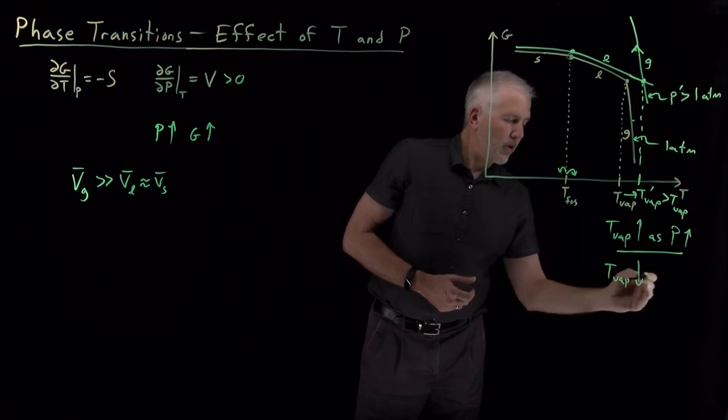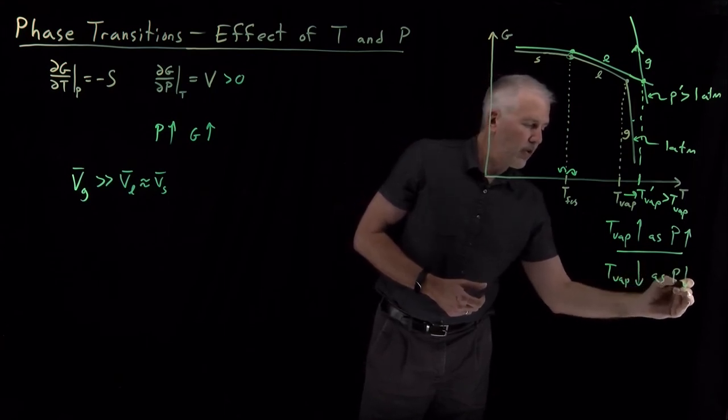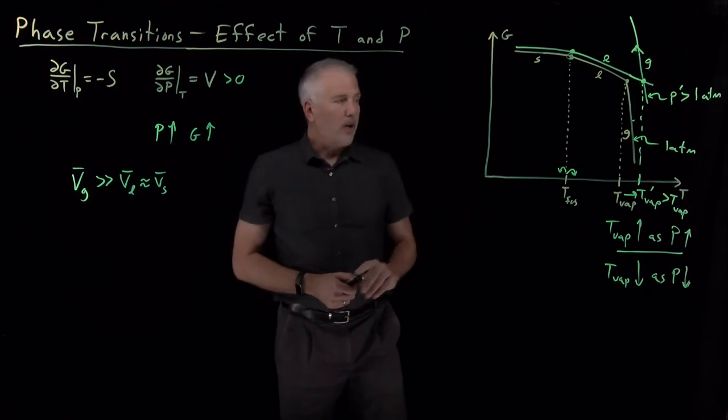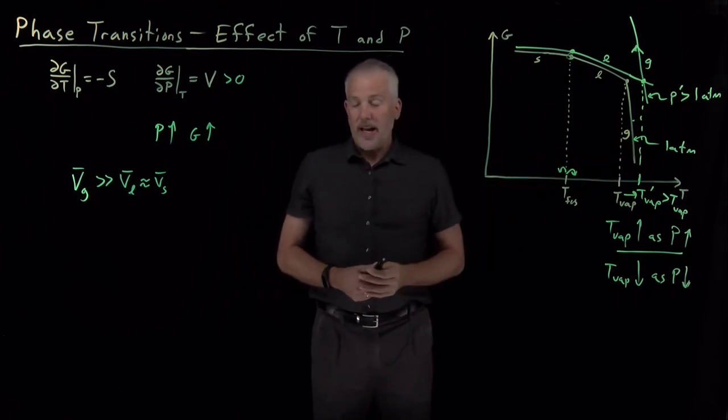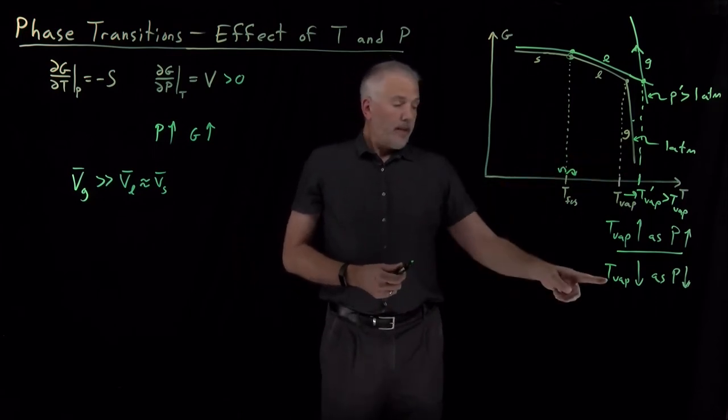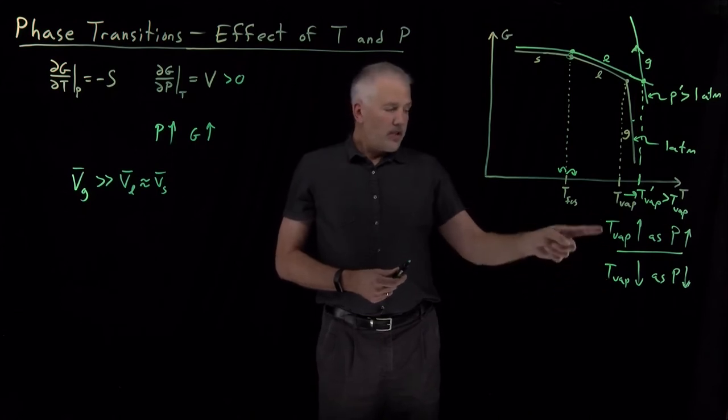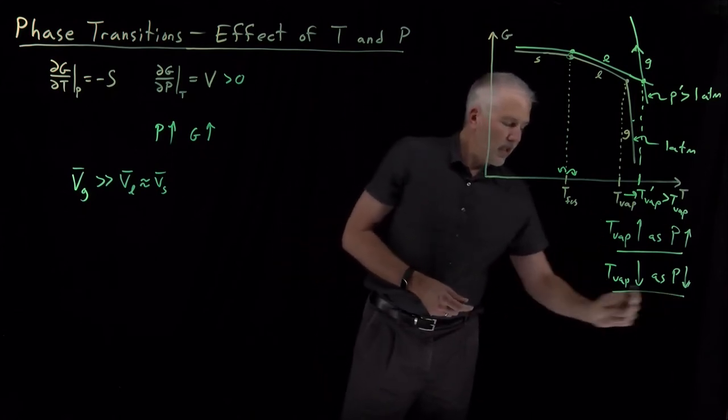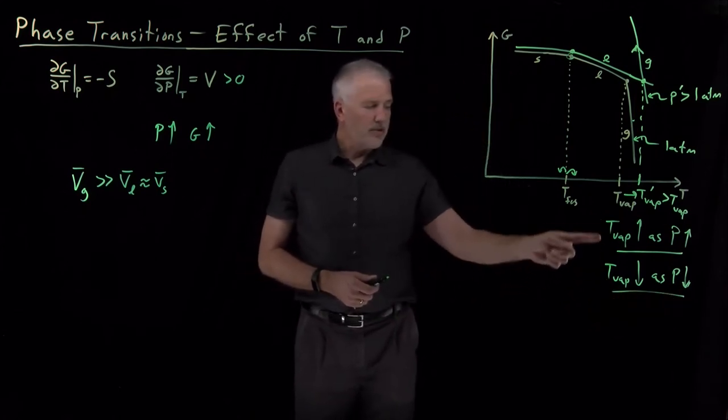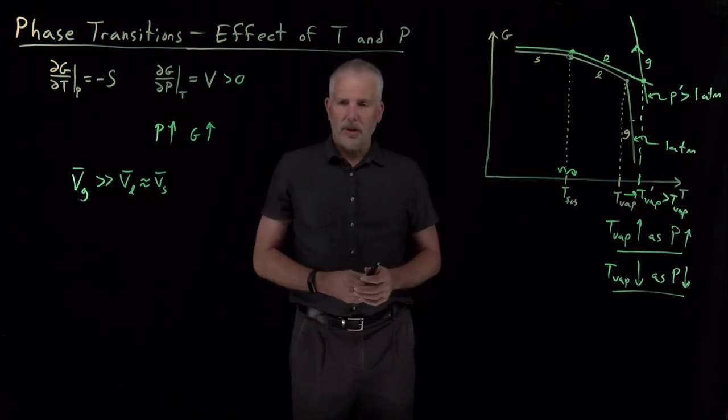We know the boiling point will decrease if I decrease the pressure. If I don't boil water at one atmosphere pressure, but if I boil it at a half an atmosphere, then the boiling point will decrease. So these two statements, you may actually, if you think about it, have some practical experience with or at least have heard about.